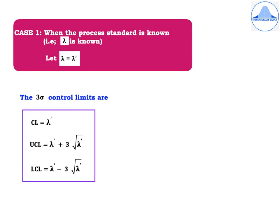This case is when the process standard is known, i.e. lambda is known. Let us assume that lambda is equal to some lambda dash. The 3-sigma control limits are given by: CL = lambda dash, UCL = lambda dash + 3√(lambda dash), and LCL = lambda dash − 3√(lambda dash).